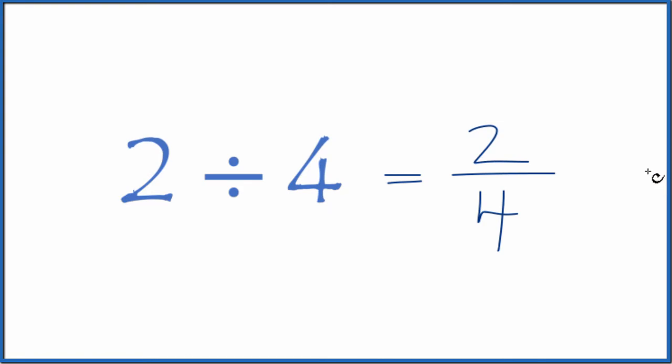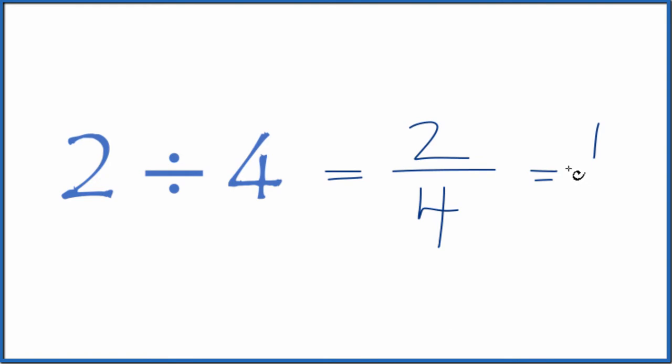We can simplify that because they're both even numbers. We can divide 2 by 2, that would give us 1, and 4 divided by 2 is 2. So 2 divided by 4 is equal to the fraction 2 fourths, or 1 half.